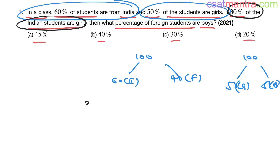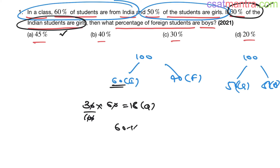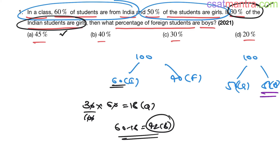Now, 30% of the Indian students are girls. 30% of 60 Indian students: the two zeros cancel, giving 18. So 18 Indian students are girls. Therefore, Indian boys = 60 − 18 = 42. So 42 Indian students are boys.